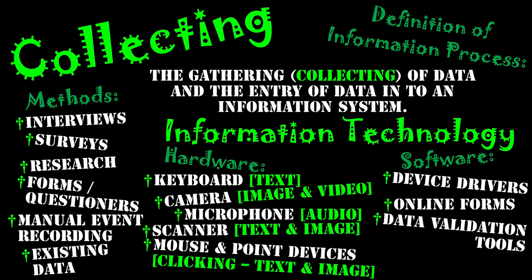We have data validation tools, which are extremely important and will come up when we discuss social and ethical issues. Validation is all about checking data at the time of collection and ensuring that it is correct. We do this through a range of checks — a type check verifies the data type being used, so if it's expecting a number and we put text in, it will highlight the error. We also have a range check, which has a barrier of values, and if a number entered exists outside those values, it will flag that the value is incorrect.